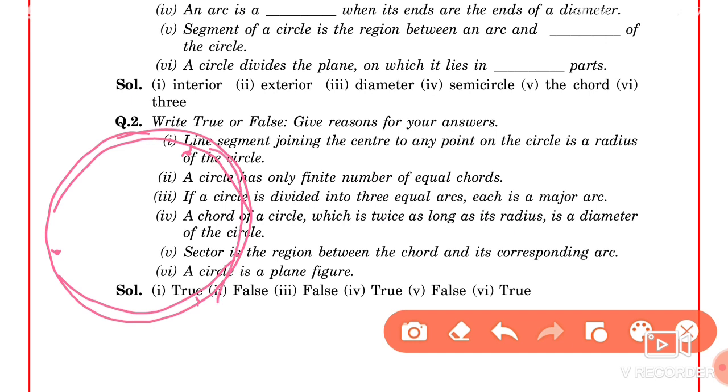We can divide into three arcs, but major arcs are not all possible. A major arc can be one, a minor arc can be one. So definitely we do not have all major arcs. There will be minor arcs. So this statement is false. Right?